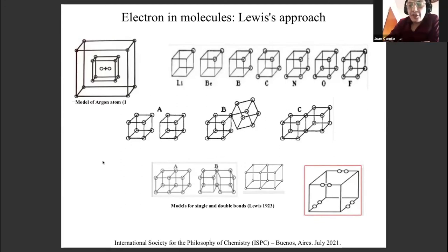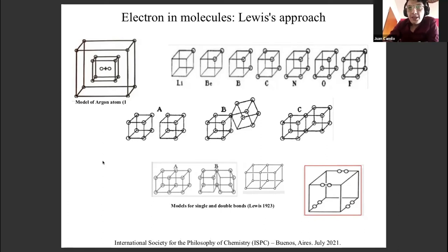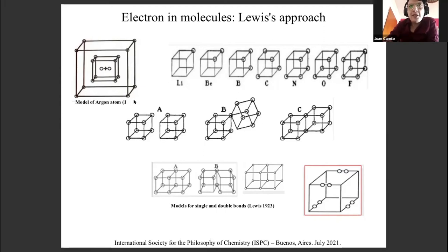Lewis was the first to think about cubic atoms. His ideas were developed in 1902, but we can see certain coincidences regarding the works of Parsons. Lewis suggested a model of the atom by considering the ideas on the constitution of matter, mainly J.J. Thomson's ideas regarding electrons and Alfred Parsons' idea of magnetons. In the Lewis model, electrons are located at the vertices of successive concentric cubes. You can see here an example — the model of the Argon atom from his 1923 book. The noble gases are fully located in the inner cube and the outside cube.